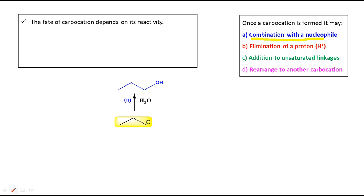A simple carbocation, CH₃CH₂CH₂⁺, is used as the example. The first possibility, shown in blue, is combination with a nucleophile. In process A, the carbocation is attacked by a water molecule at the positive charge, resulting in the formation of an alcohol. It is not necessary that it will be H₂O — any other type of nucleophile is also possible, but water is used here as the example.